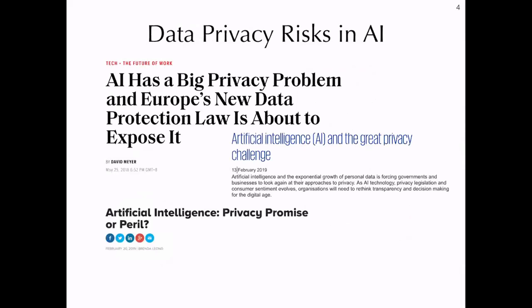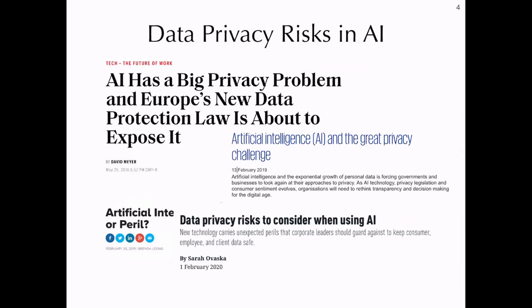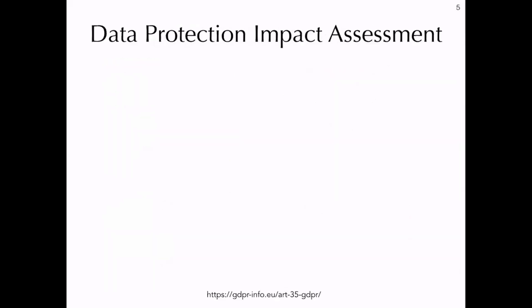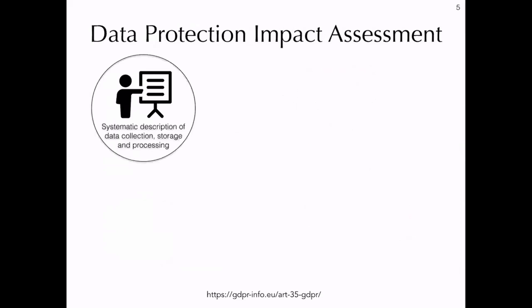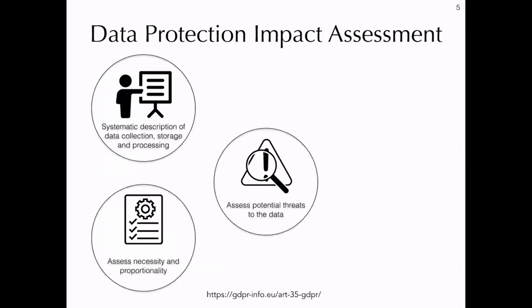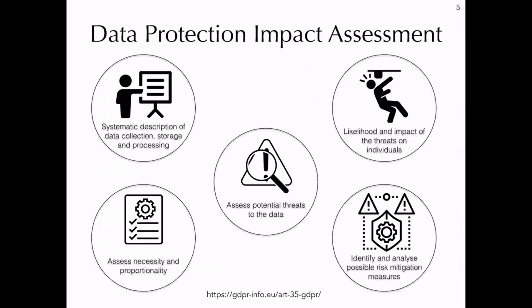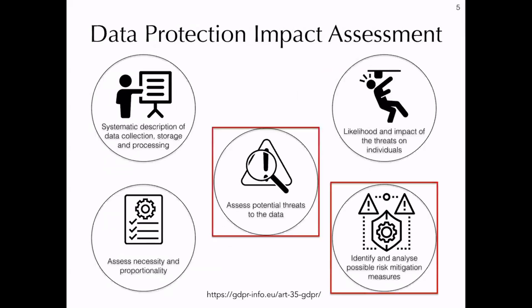There has been speculation and discussion around the privacy risks of AI systems. Several people have questioned if AI systems can ever be compliant with data protection laws. In fact, if a data processing uses innovative technologies such as machine learning, as per Article 35 of GDPR, it is mandatory to perform a Data Protection Impact Assessment (DPIA). Traditionally, when performing risk assessment in DPIA, organizations focused on illegitimate access to data, say through security breaches.